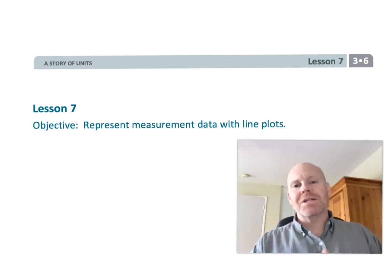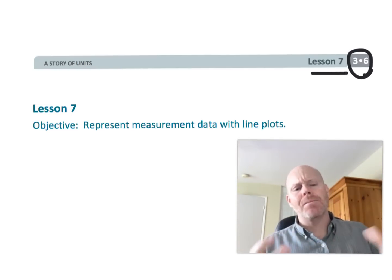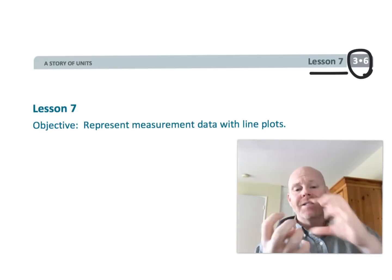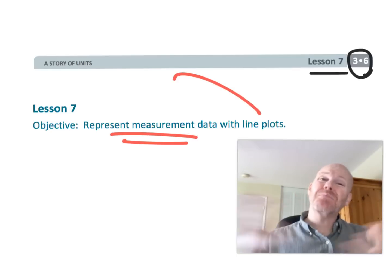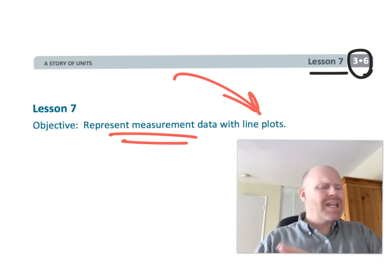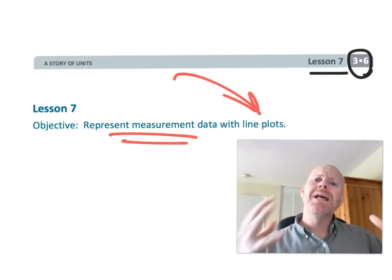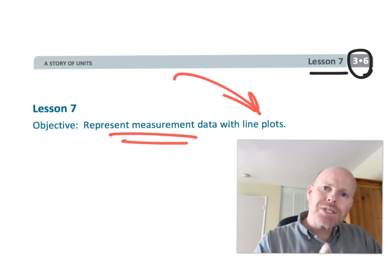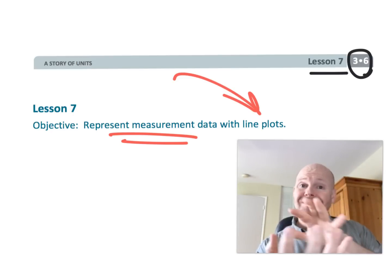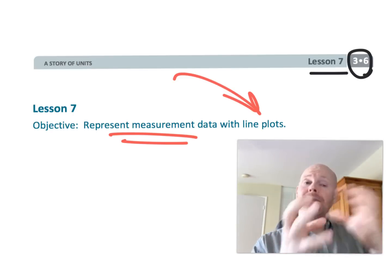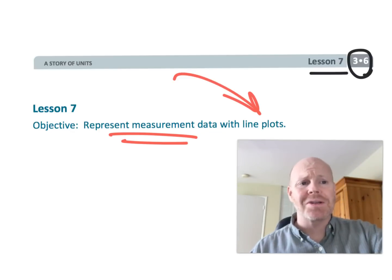This is third grade module six lesson seven. In this lesson we're going to be taking data and making line plots. In the previous videos, students have been given all the information — everything's been done for them. This time we're taking one step forward: students are going to be given the data and then from the data they need to make their line plots. So let's get started.